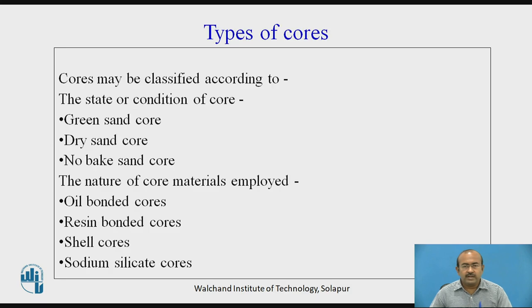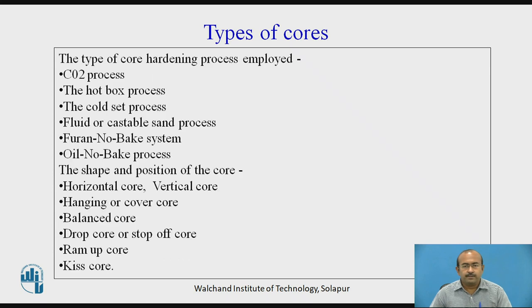Let us go with the types of cores. Cores may be classified according to the state or condition of the core — that is, green sand, dry sand, and no-bake sand. They can also be classified by the nature of core material employed — that is, oil bonded, resin bonded, shell cores, and sodium silicate cores. Classification depending on the type of core hardening process — that is, CO2 process, the hot box process, cold set process, and so on. The shape and position of the core is also another factor for classifying the various types of cores.